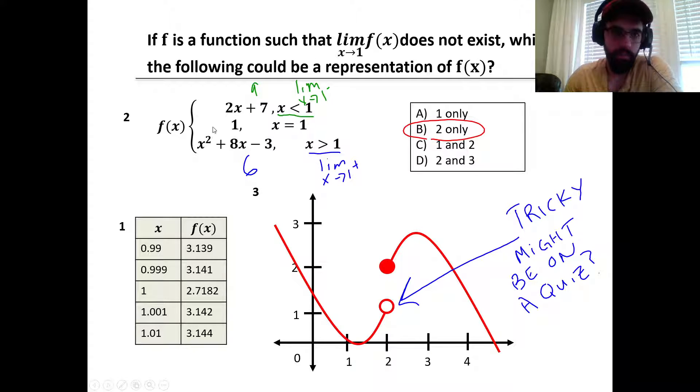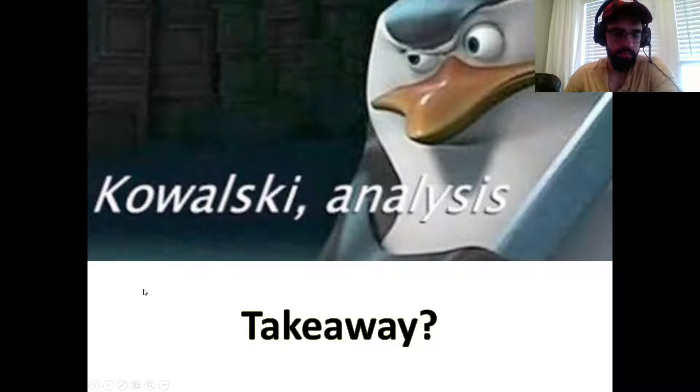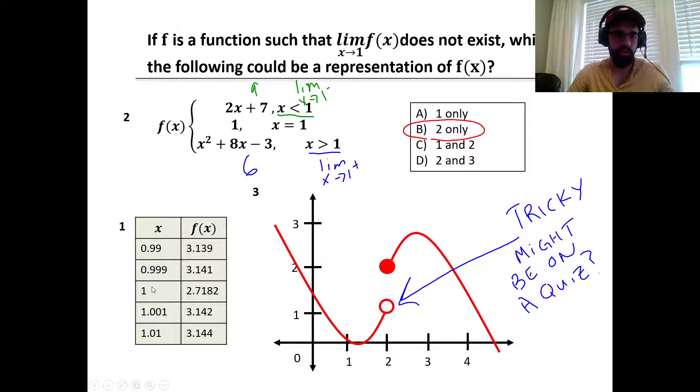If we look at number 1, that's the table. Here's the x value of 1. We can see that from the left we approach about 3.14. From the right we also approach about 3.14. So the limit from the left equals the limit from the right.